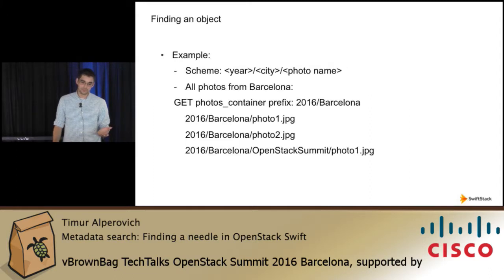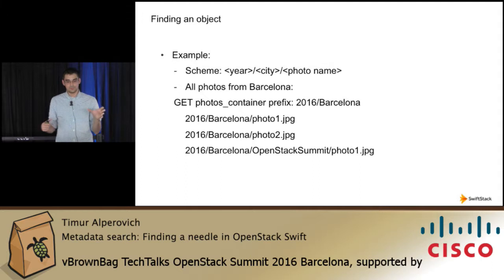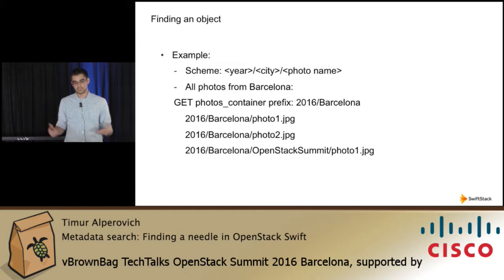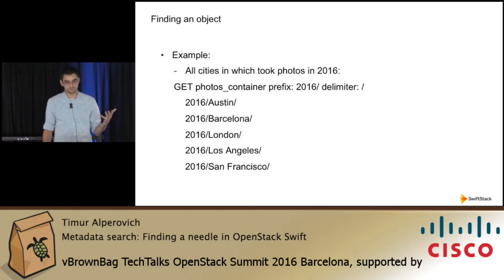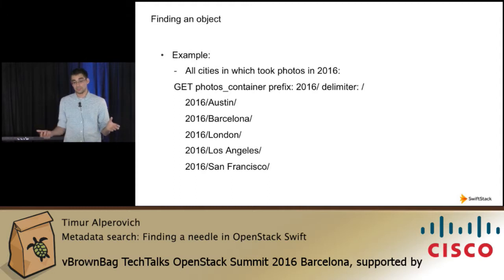For example, if we have a scheme using the year, city, and name of the photo file, and I wanted all photos from Barcelona in 2016, I could query my container with the prefix '2016/Barcelona' — it would return photo one, photo two, and my OpenStack Summit photos. The delimiter lets us collapse results; if I wanted all cities where I took photos in 2016, I'd use prefix '2016' with delimiter '/', getting back 2016/Austin, Barcelona, London, et cetera.